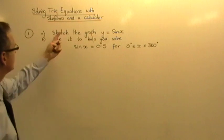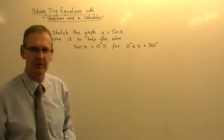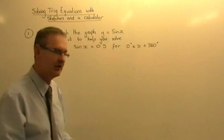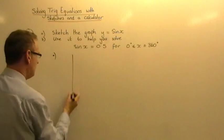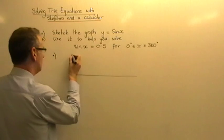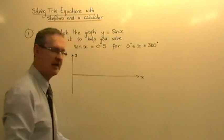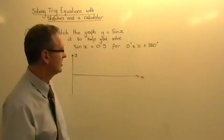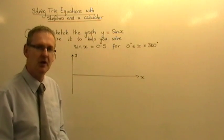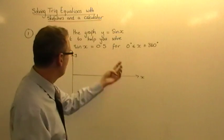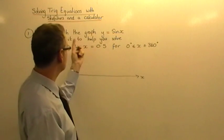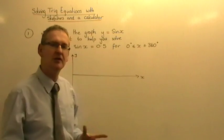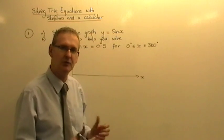Let's have a look at a typical example. Question one, Part A. It says sketch the graph of y equals sine x. Now a sketch does not mean table of values. It does not mean accurate picture. Reading on in part B it says use it to help you solve sine x equals 0.5 and there's the range that I need to use. So I'm going to do a sketch of y equals sine x graph between 0 and 360.